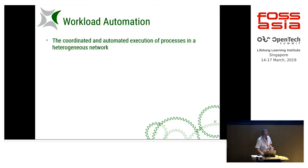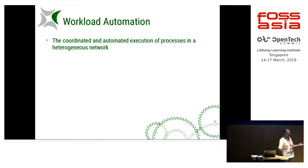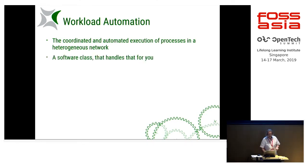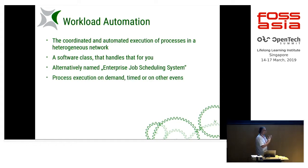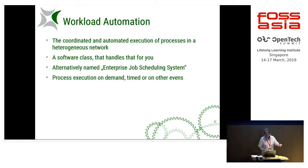So, what is workload automation? Basically, it's the coordinated and automated execution of processes in a heterogeneous network. Simple speaking: starting programs, running programs, monitoring programs, and recording what the result of those programs are — whether they were successful or something else. Around that, there's a software class called Enterprise Job Scheduling Systems or Workload Automation Systems to support those automation tasks. Processes have to be started on demand, timed like using Cron, or triggered by dependencies, resource changes, or other events in your IT — which will trigger the execution of programs, whole groups of programs, or a whole batch chain.